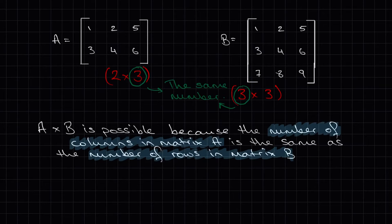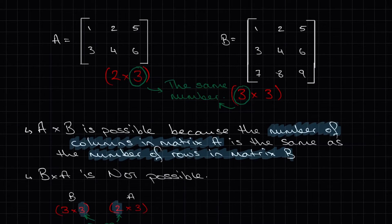This is the check that we have to make before we start multiplying. If we tried to multiply matrix B times matrix A, we would see that it's not possible because the number of columns in matrix B is different to the number of rows in matrix A.